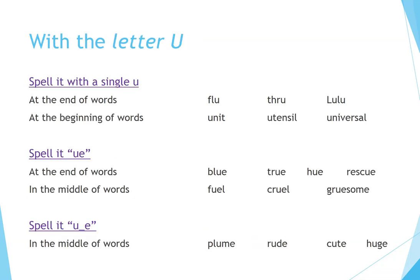With the letter U: spell it with a single U — at the end of words: flew, threw, Lulu; at the beginning of words: unit, utensil, universal. Spell it UE — at the end of words: blue, true, hue, rescue; in the middle of words: fuel, cruel, gruesome. Spell it U silent E — in the middle of words: plume, rude, cute, huge.